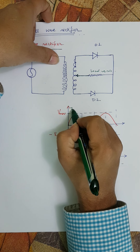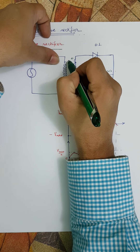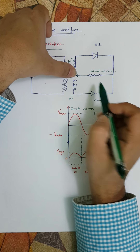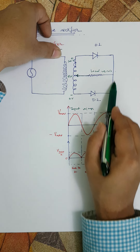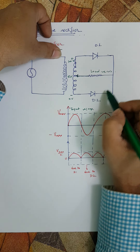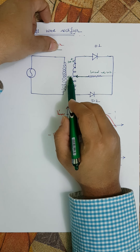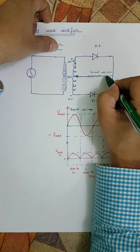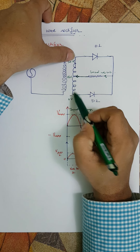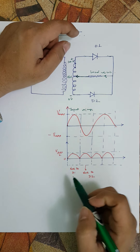In the positive half cycle, let's say this is plus 100 volts, this is zero volts, and this center tap is around 50 volts. Can the current flow directly? No, because diode D2 won't allow it. So the current flows from the high potential of 100 to the low potential of 50. The current flows from right to left through the resistance — this potential drop is what we are utilizing.